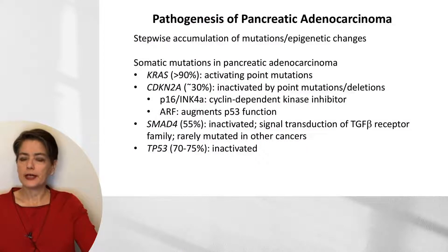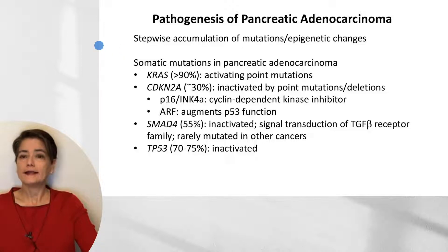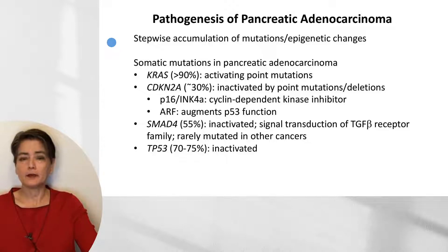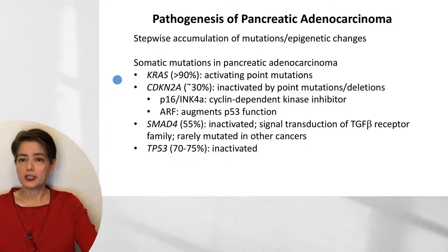The pathogenesis of pancreatic adenocarcinoma involves a stepwise accumulation of mutations and epigenetic changes — a pattern seen in carcinomas in contrast to translocation-associated sarcomas or hematopoietic neoplasms. There are four somatic mutations typically seen in pancreatic adenocarcinoma that are worth knowing.